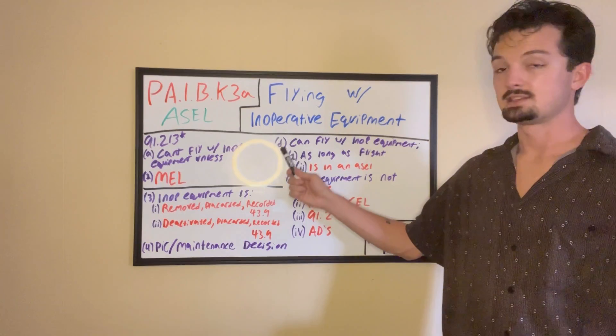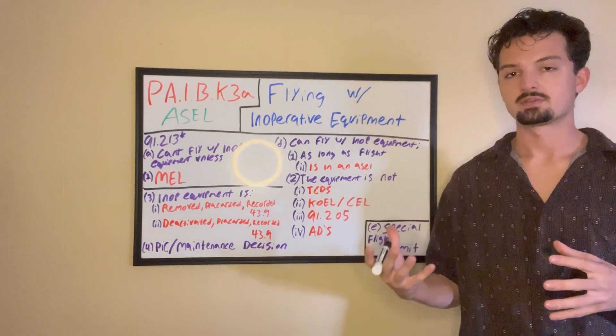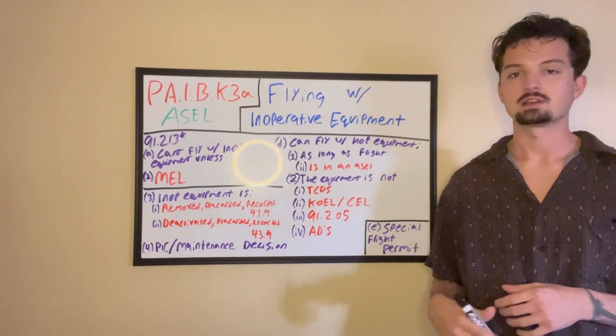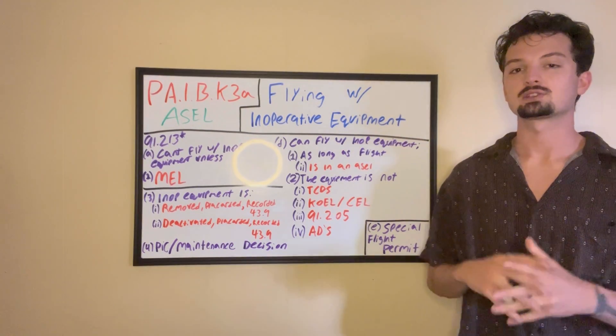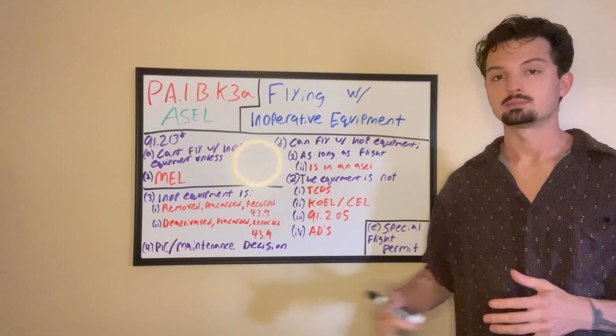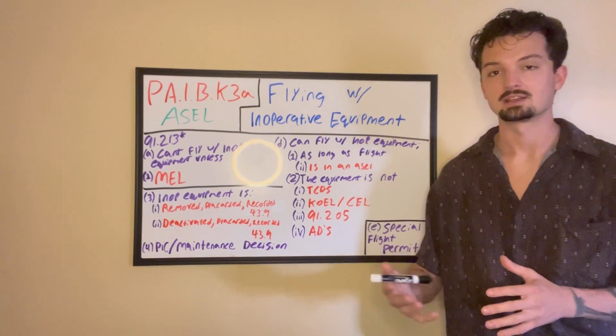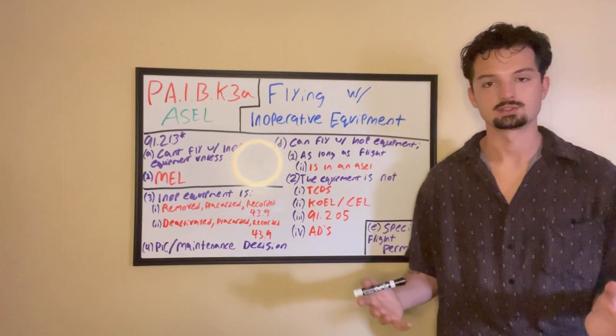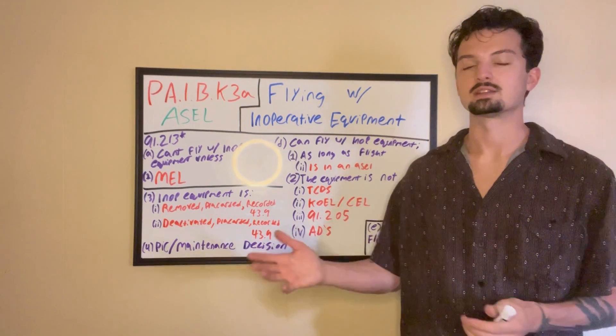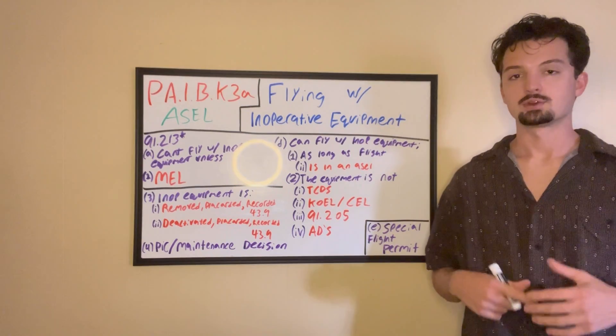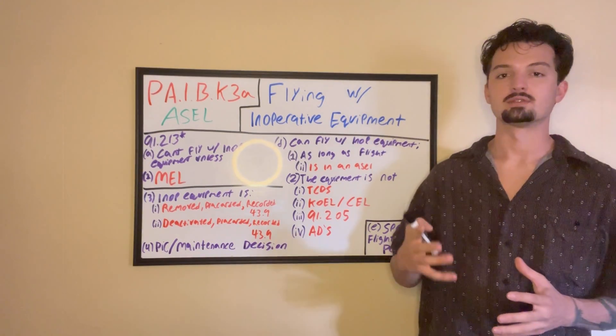We're not going to dive into that in this video, but we did a little bit in a previous video. All right, and next, we're still in D of 91.213, and we're moving on to number four. And that is, after you've figured out that you don't need this specific piece of equipment, and you've removed or deactivated it, placarded it, logged it, now it comes down to the PIC decision. And that's what most people just leave it at, but it's actually both in the regulation listed, the PIC slash maintenance personnel decision. So, after a piece of equipment has been removed by maintenance personnel, they're going to say whether or not the plane is ready to return to service or not.